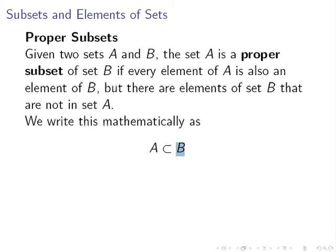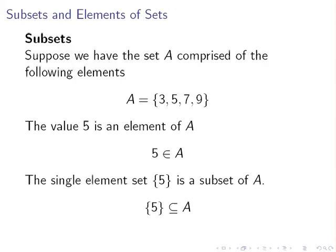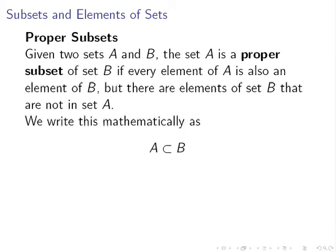I'm going to go back here to show you the distinction. The subset symbol has a bar that's like an equal sign. In this example, the single element set {5} is also a proper subset of A, so we could have used the proper subset symbol. A proper subset means there are elements of the larger set that are not in the smaller set.